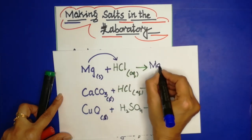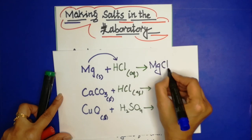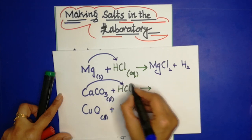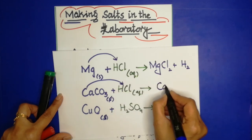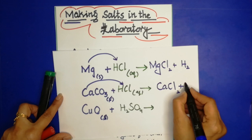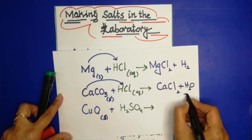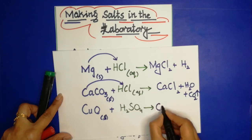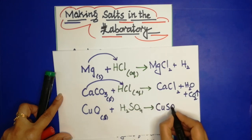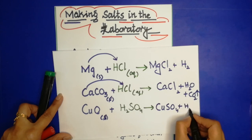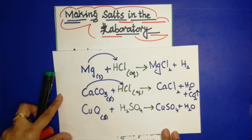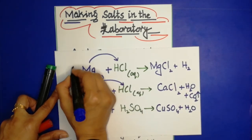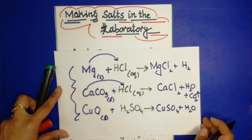For the first method: magnesium reacts with HCl to produce MgCl₂ and hydrogen gas. Calcium carbonate reacts to form calcium chloride, H₂O, and CO₂ gas. When copper oxide reacts with sulfuric acid, it forms copper sulfate plus H₂O. Salt is formed when these reactions take place, and the method to prepare all of these salts will be the same.